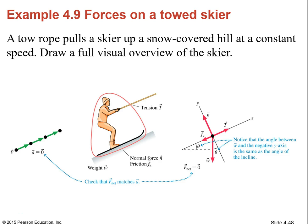Looking at the skier: the tension force goes up along the rope, the weight goes straight down (not perpendicular to the surface), the normal force goes perpendicular to the surface, and friction acts along the surface. The angle of elevation of the slope is equal to the angle between the normal and the weight. Since the skier moves at a constant speed, there's no change in velocity and therefore no acceleration.